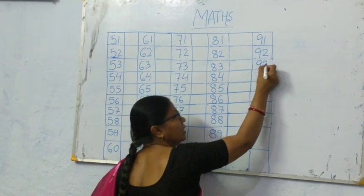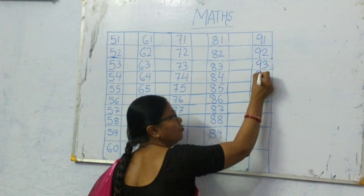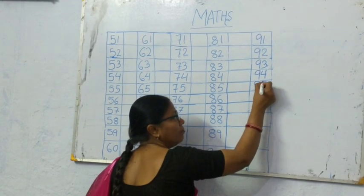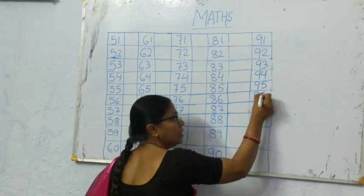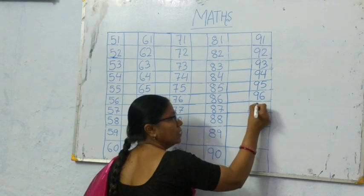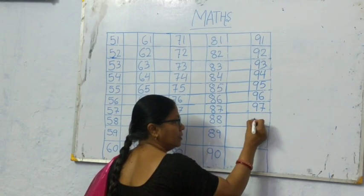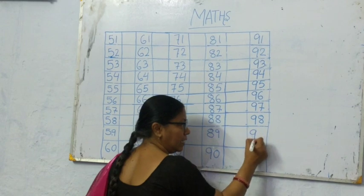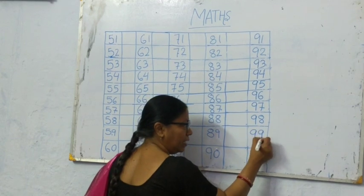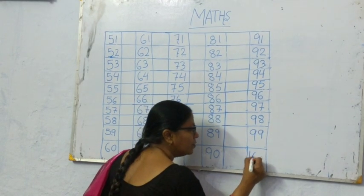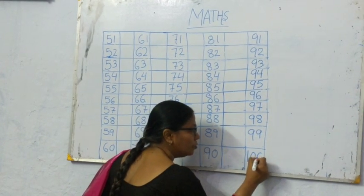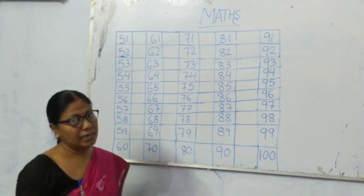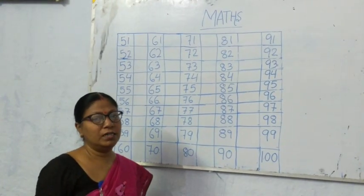91, 92, 93, 94, 95, 96, 97, 98, 99, 100. That's all for today, children.